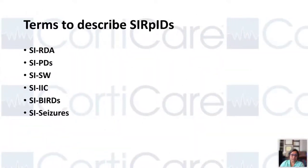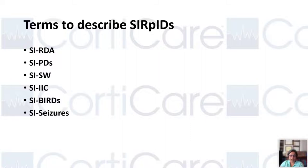Here is another stimulus-induced pattern at about 1 to 1.5 hertz with underlying rhythmic delta activity. There is an evolution in frequency, amplitude, morphology, and location — this is quite an evolving pattern. When describing stimulus-induced patterns, the P should be capitalized. They can be stimulus-induced RDA, LPDs, GPDs, LRDA, spike and wave, ictal-interictal continuum, bursts, or even seizures.